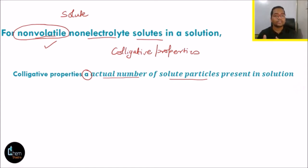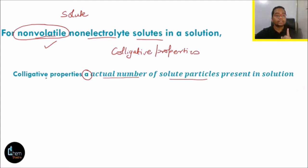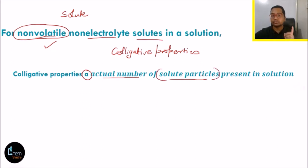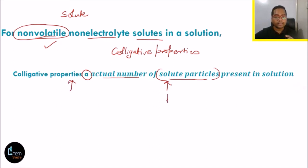Colligative properties are dependent on the number of solute particles. If the number of solute particles increases, the colligative property value will increase. If the number of solute particles decreases, the colligative property will decrease. This is a very important concept to understand.